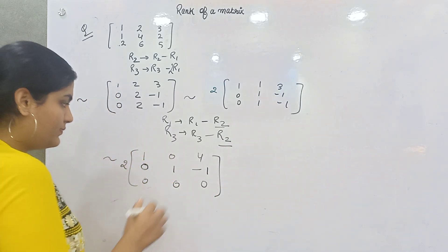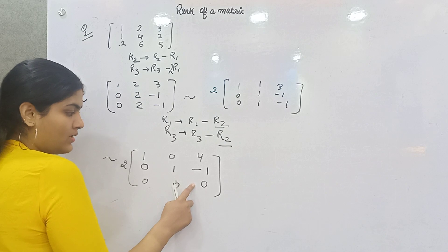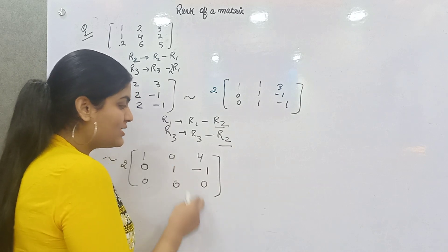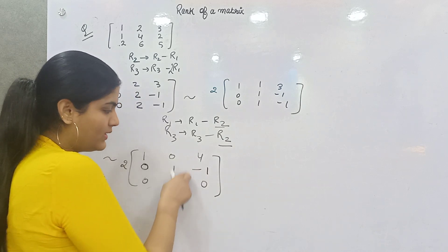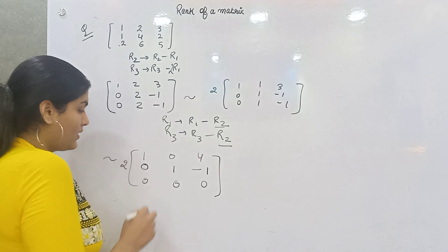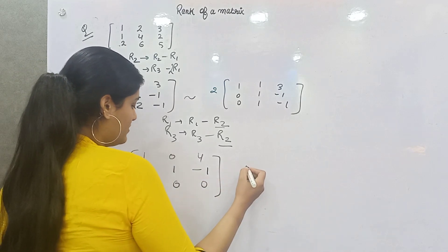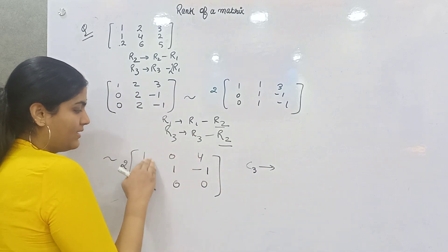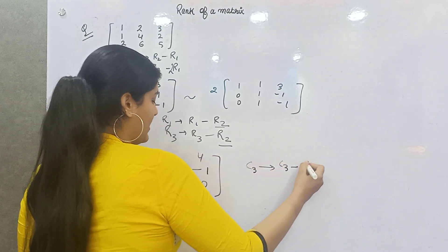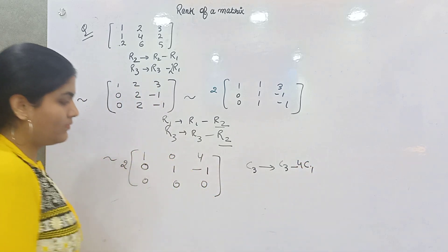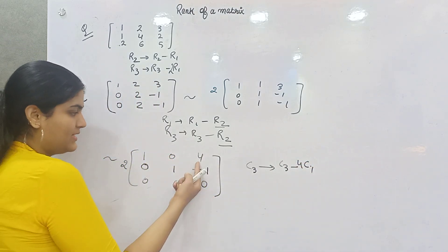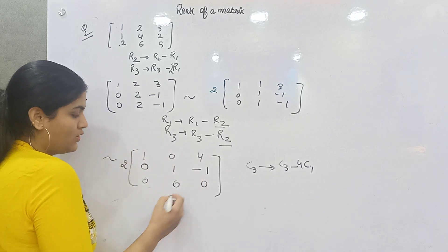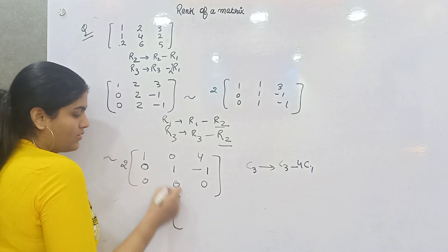Now come to this point — R3 is entirely zero, so you cannot make it 1. But can you make any other entry zero? Think about it. If you apply C3 → C3 − 4C1 in column 3: 4 minus 4×C1 — 4 times 1 becomes 0. You don't change C1 and C2.